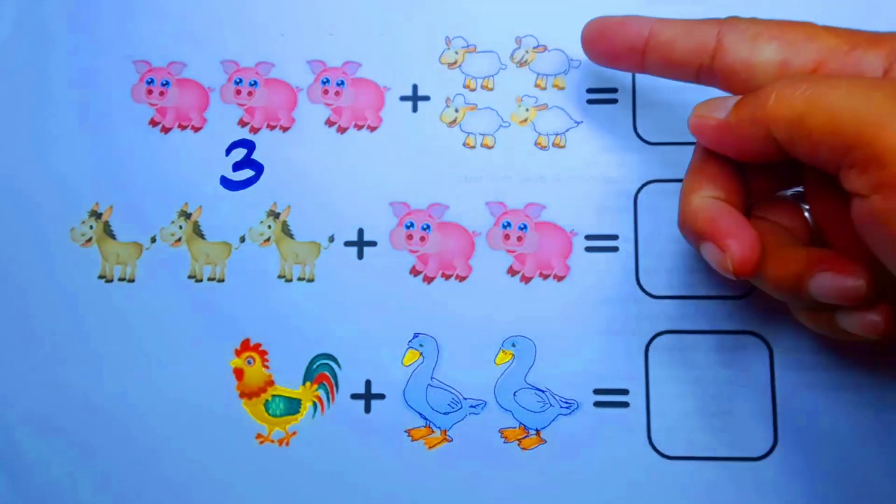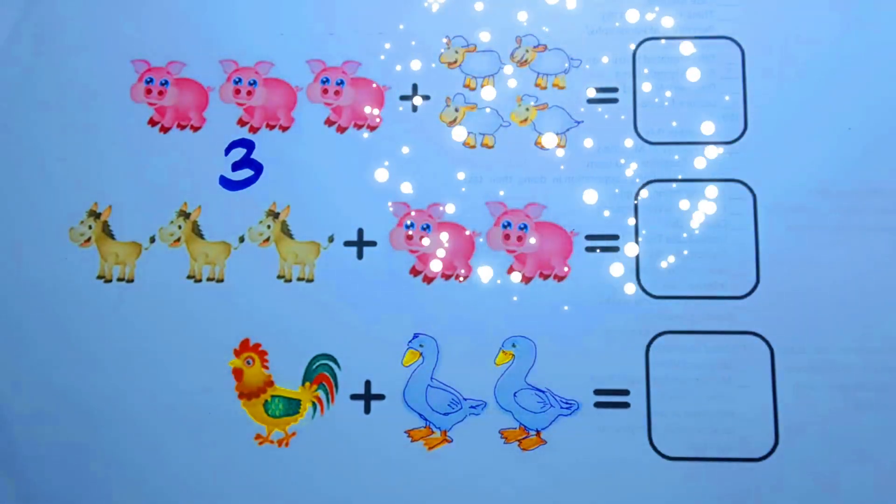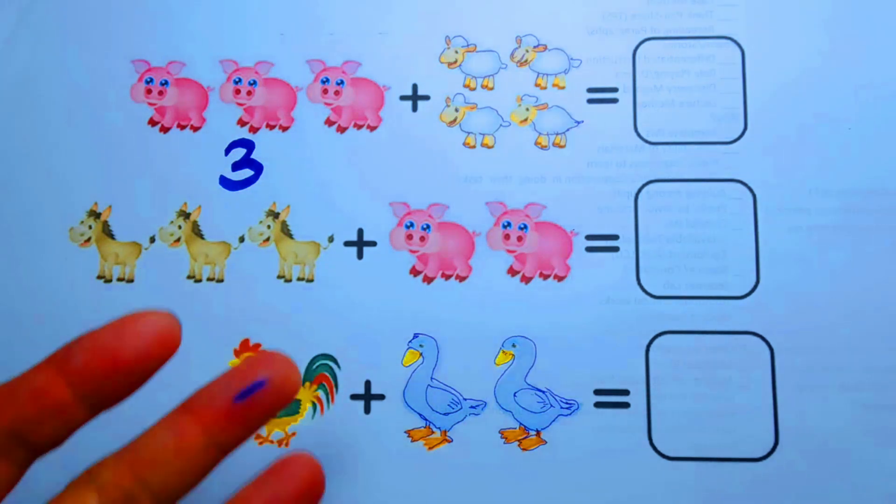Next, the sheep. One, two, three, four. Four sheep. The number four is like this.